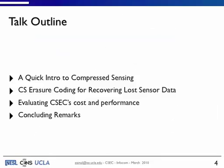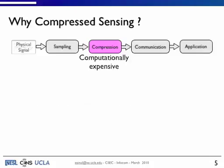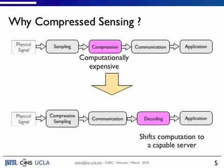So I'm going to go into a quick intro to compressed sensing, and then we'll go into the details of the rest. So firstly, why compressed sensing? Typically, when we do our sensing, we have some physical signal, we sample it, we compress it, we communicate it, and send it to the application. But the compression step is usually the more computationally expensive if it's not the communication step. And so what we are saying here is that by using compressed sensing, we are moving that computation block to the other side of the communication link to a more capable server.